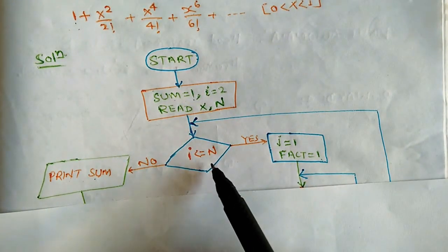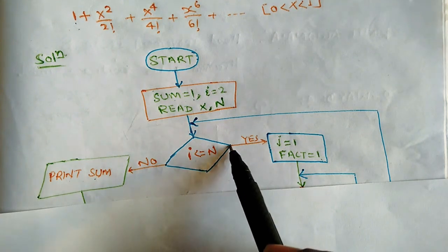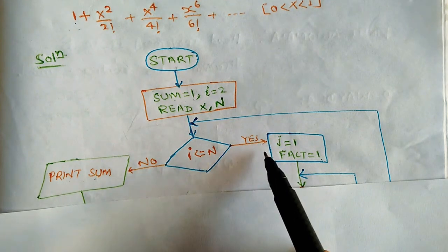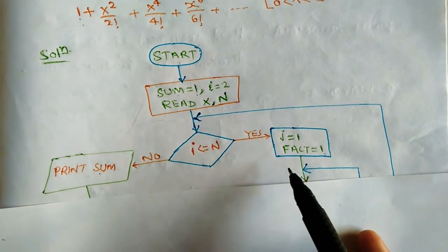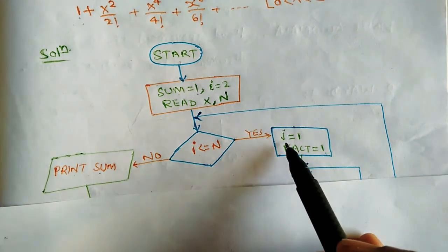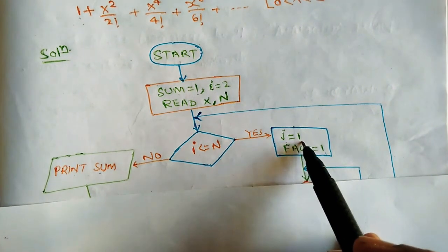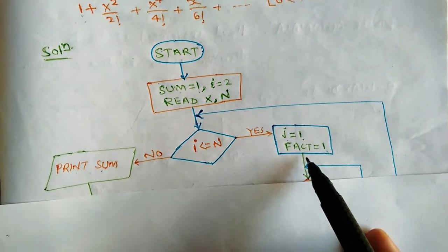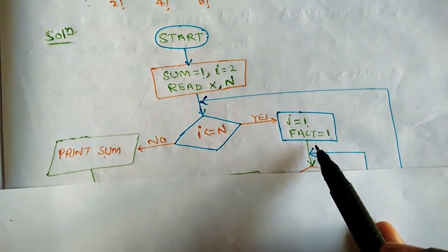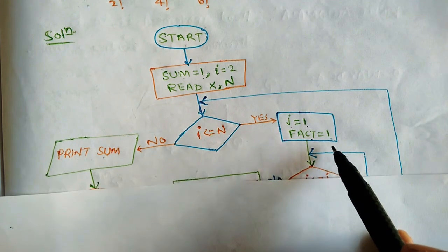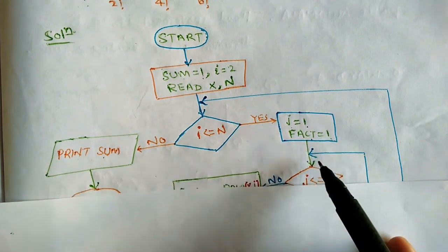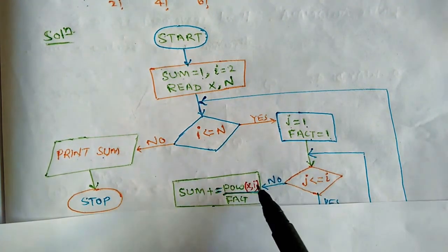If n is more than 1, the condition is always true, so we proceed into the loop body. Here, factorial will be calculated: a variable j is initialized and fact is another variable for the factorial. The factorial calculation will compute the value for i — for example, for i = 2 it will compute 2!.